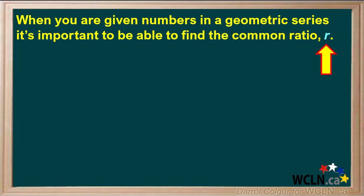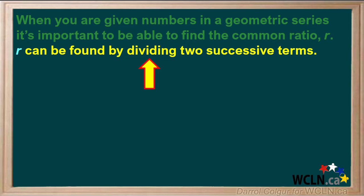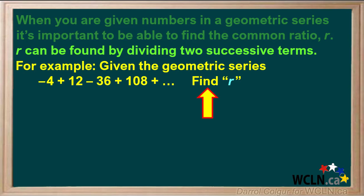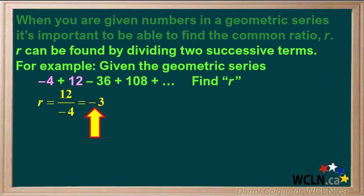When you are given numbers in a geometric series, it's important to be able to find the common ratio R. R can be found by dividing two successive terms. For example, if we are given the geometric series negative 4 plus 12 minus 36 plus 108, etc., and we are asked to find R, we divide the second term, 12, by the first term, negative 4, and the answer is negative 3.